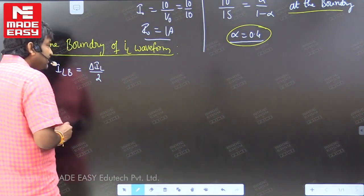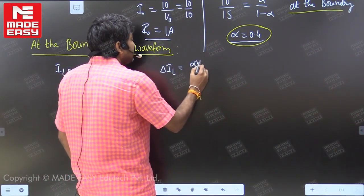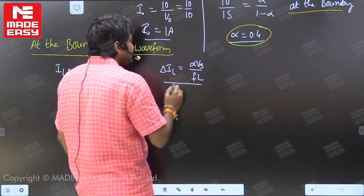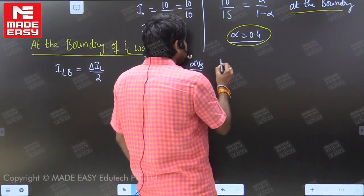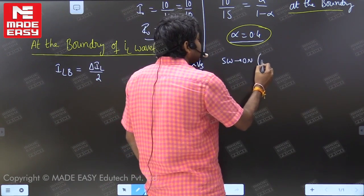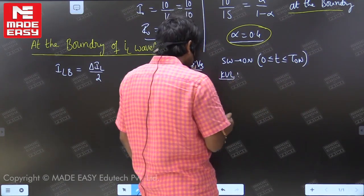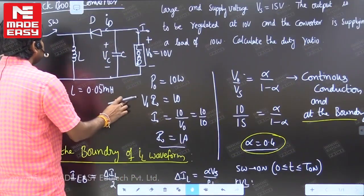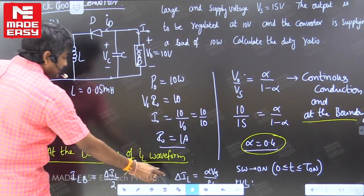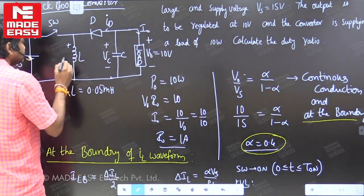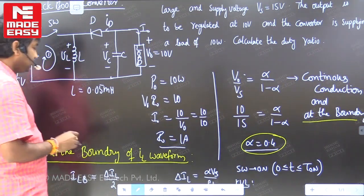What is the formula for ripple current in a buck-boost converter? The ripple current delta_IL is equal to alpha times V_s divided by F times L. How do you get this expression? Apply KVL in the loop when the switch is on. During the interval 0 to T_on, KVL gives: minus V_s plus V_L equals 0, so V_L equals V_s.